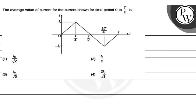Hello, let's see the question. The question says: find the average value of current shown in the graph for the time period 0 to T/2. So, what do we need to find from 0 to T/2? We need to find the average value of current.